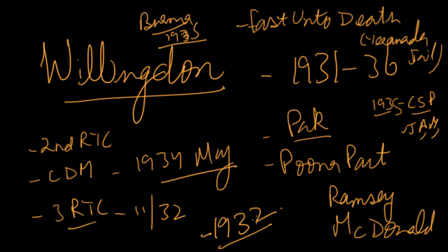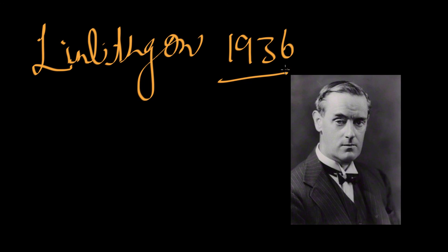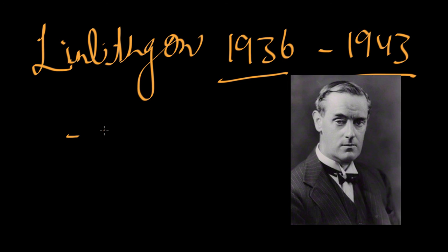We still have a little more time so let's cover the next Governor General too. The next Governor General is Linlithgow — he came in around March-April 1936 and stayed up to 1943. He was technically the first 'Crown Representative.' He was also the chairman of the Joint Parliamentary Committee on the Government of India Act 1935.